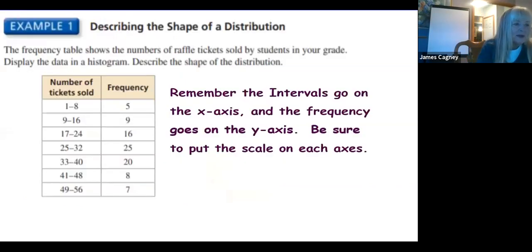For this very first example, we are going to describe the shape of distribution. The frequency table shows the number of raffle tickets sold by students in your grade. Display the data in the histogram and describe the shape of distribution. Remember the intervals go on the x-axis, frequency goes on the y-axis. You need to put scale on each one of those. The intervals are going to be one to eight, nine through sixteen. This tells the frequency. Pause the video for a second. I want you to make this histogram and then describe the shape. It's either going to be symmetric, skewed right, or skewed left.